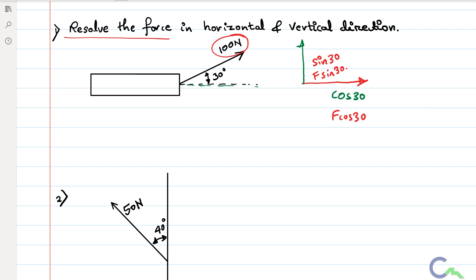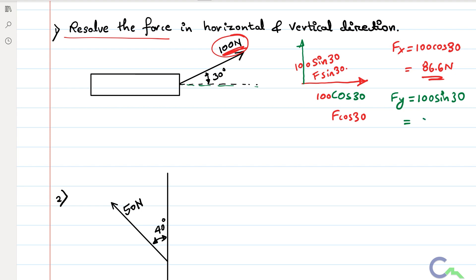Where F is the force value, that is 100 Newton. So the horizontal component fx = 100 cos 30, which gives 86.6 Newton. Then resolving in the vertical direction, fy = 100 sin 30, which gives 50 Newton. Both values are positive. So for this first problem: angle given with respect to horizontal means horizontal component is cos theta, and vertical component is sin theta.